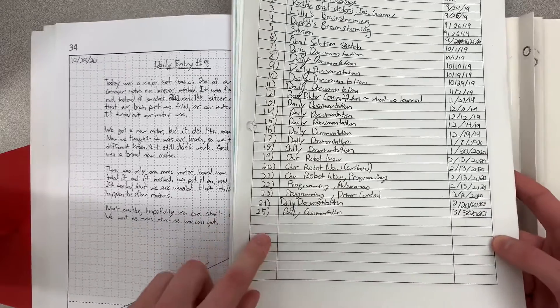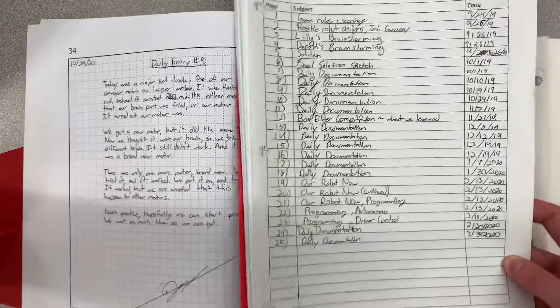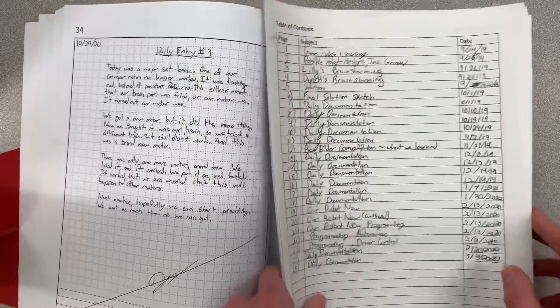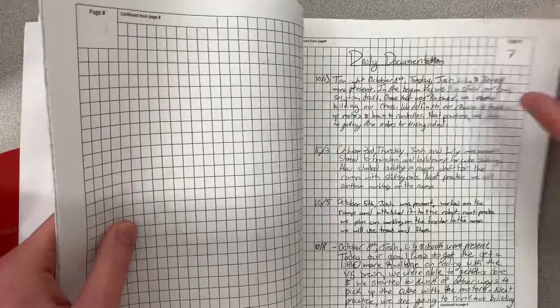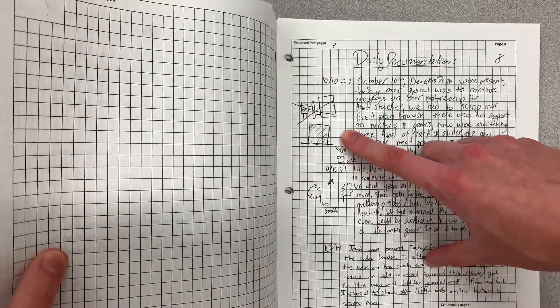And this one also only has 25 pages total, whereas this good notebook has over 50 and we're only halfway through with the season. Now, some more stuff with this notebook is there's lots of writing in it and all the information is just kind of crammed in there. And same thing with the sketches and they're not super neat either.